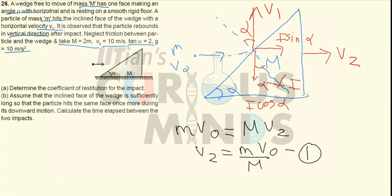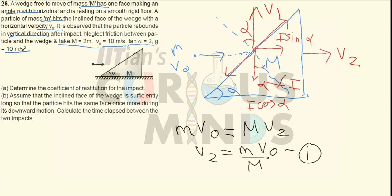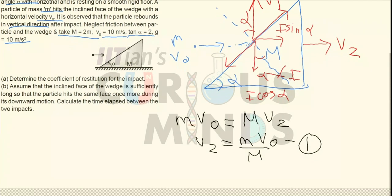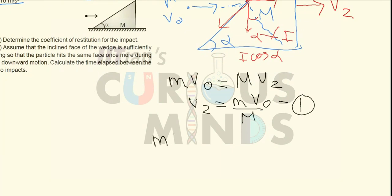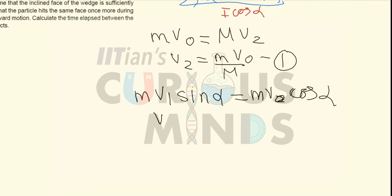In the direction perpendicular to the impulse, there is no force acting. So the momentum of small m after the collision equals the momentum of small m before the collision in that direction. Momentum after collision: mV1·sin(α) = mV0·cos(α). Therefore V1 = V0·cos(α)/sin(α) = V0·cot(α). Let this be the second equation.